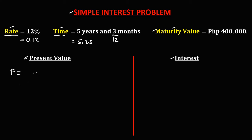Then substitute the values. Since the maturity value is 400,000, we have 400,000 over the rate, that's 0.12 times the time, 5.25, then plus 1.